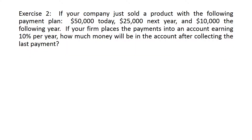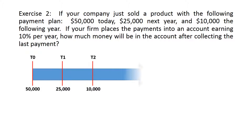Moving to the next exercise, we are solving for future value with present values given at different time periods — put them in a timeline. At t0 we have 50,000; at t1 we have 25,000; at t2 we have 10,000. To move 50,000 from t0 to t2 is two periods. Enter PV = -50,000, N = 2, I = 10%, and solve for FV, which gives 60,500.